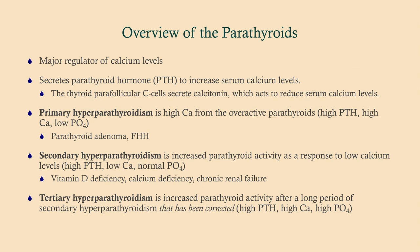Primary hyperparathyroidism is high calcium from an overactive parathyroid gland, and usually that's due to an adenoma. Secondary hyperparathyroidism is an increased parathyroid activity as a response to low calcium. For whatever reason, calcium is low — it releases negative feedback on the parathyroids, so the parathyroids are working overtime, but not autonomously. They're doing it because you have a low calcium level, so they're working the way they're supposed to. Tertiary hyperparathyroidism is not commonly tested — it's increased parathyroid activity after a long period of secondary hyperparathyroidism that's been corrected.